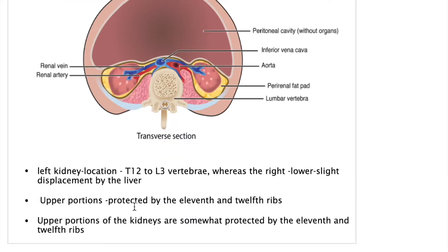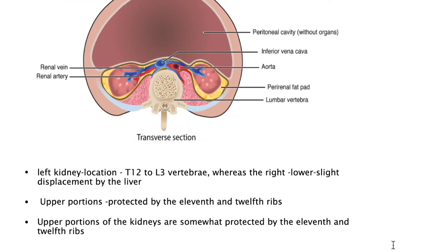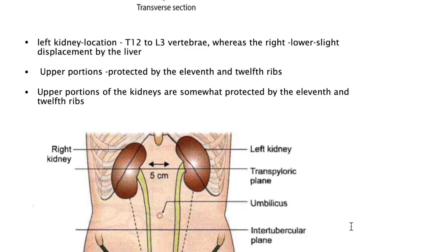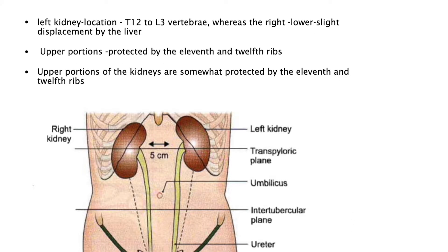The left kidney is located between T12 and L3 vertebra, but the right will be slightly lower because the liver on top pushes the right kidney down. Normally the upper portion of the kidney is overlapped by only the 11th and 12th ribs, and there will be a suprarenal gland as well.